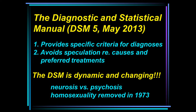The DSM authors tried to avoid speculation about causes and preferred treatments, because psychologists come from so many different theoretical perspectives — psychoanalytic theorists who follow Freud, cognitive behaviorists, radical behaviorists, cultural psychologists, and so on. Depending on your theoretical background, the explanation for causes of psychiatric problems will differ, and the form of therapy might differ as well. So the authors of the DSM tried to avoid any speculation about causes or preferred treatment.